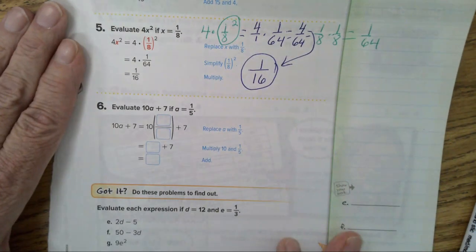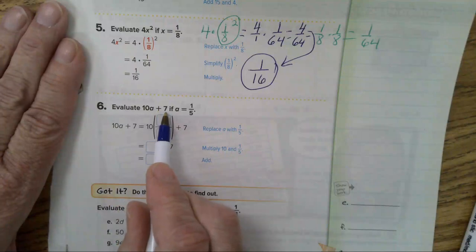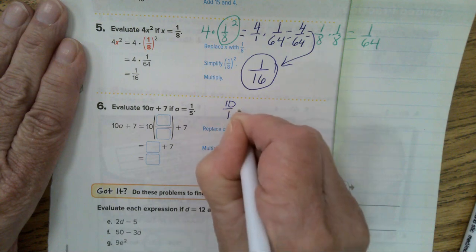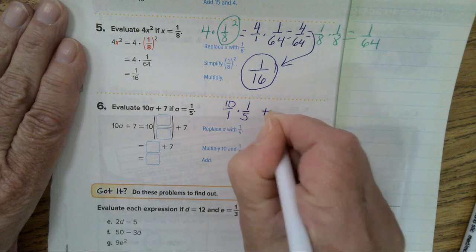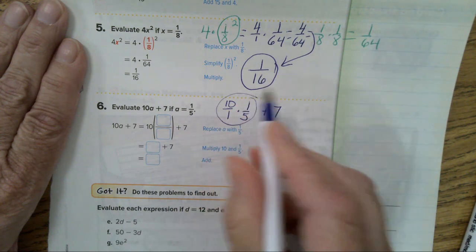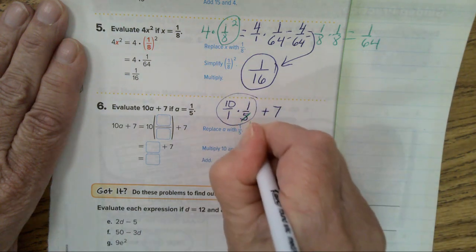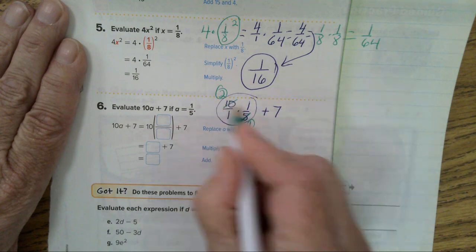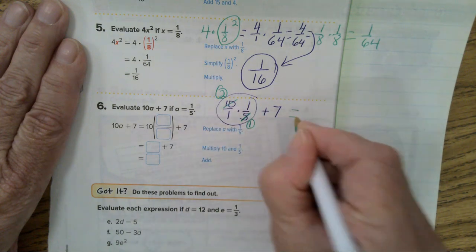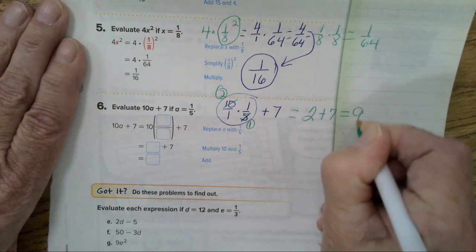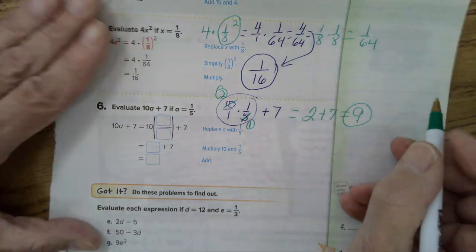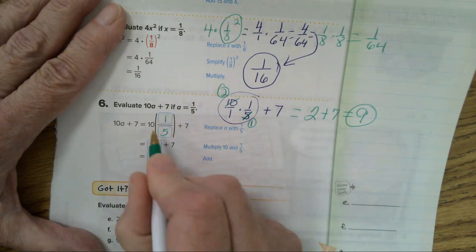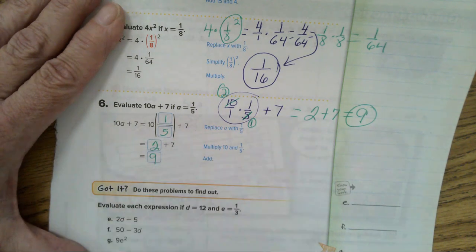Number 6. Evaluate. This says 10 times A plus 7. So, 10, and since I'm multiplying by a fraction, I'm going to put a 1 underneath it. Times 1 5th plus 7. Well, we have to do our multiplying first. I'm going to simplify before I multiply. 5 divides 5 once. 5 divides 10 two times. You'll end up with 2 over 1. 2 times 1 is 2. 1 times 1 is 1. So, that will equal 2 plus 7. And your final answer is a 9. Now, if you were filling this in, you would have 10 times 1 over 5 plus 7. 10 times 1 5th is 2. And 2 plus 7 is 9.